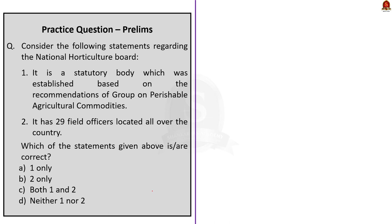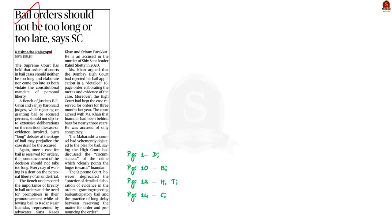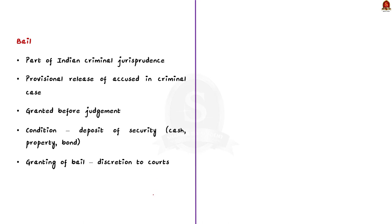The next news article is about bail granted to accused persons. The Supreme Court has held that bail orders should not be too long and elaborate, as it violates the constitutional mandate of personal liberty guaranteed by Article 21. Bail refers to the provisional release of the accused in a criminal case in which the court is yet to announce the judgment — it is granted before the judgment. Usually bail is given on condition of depositing some security to ensure the person's return at the required time.